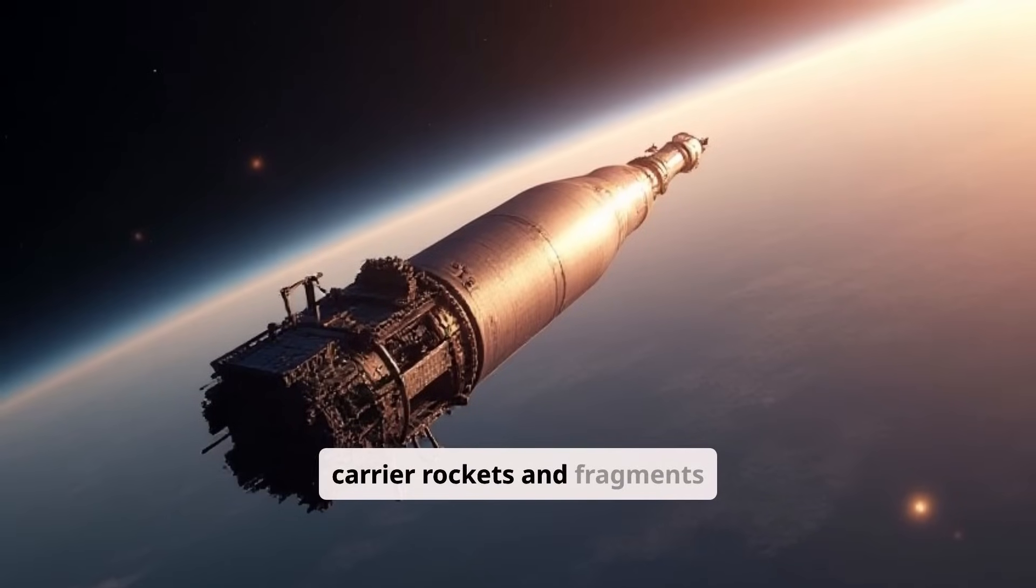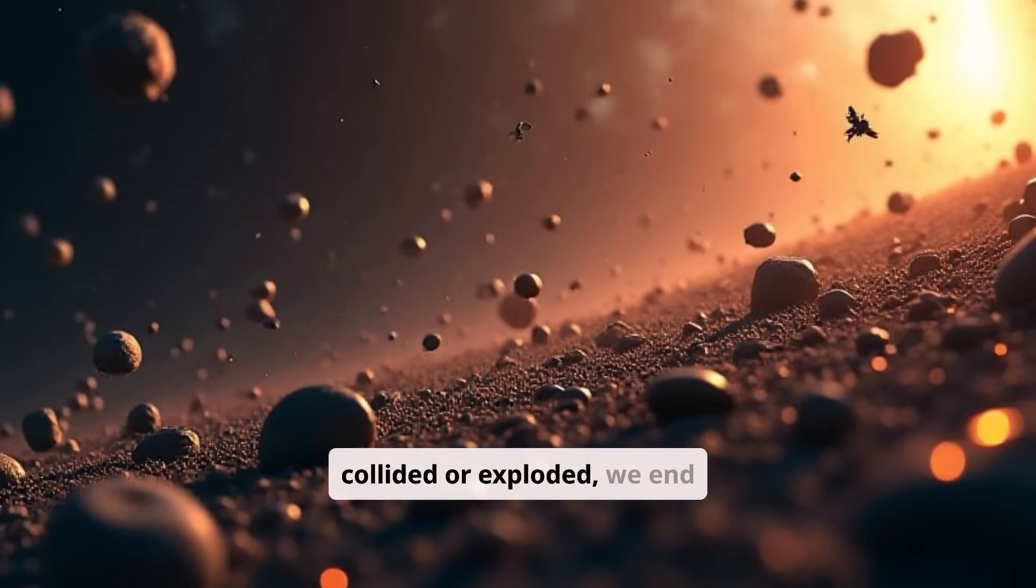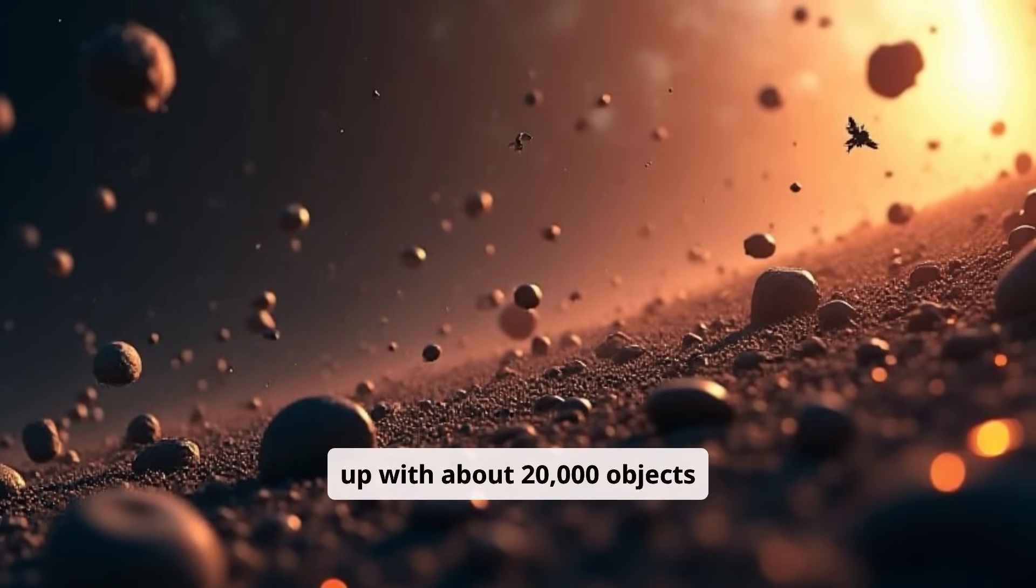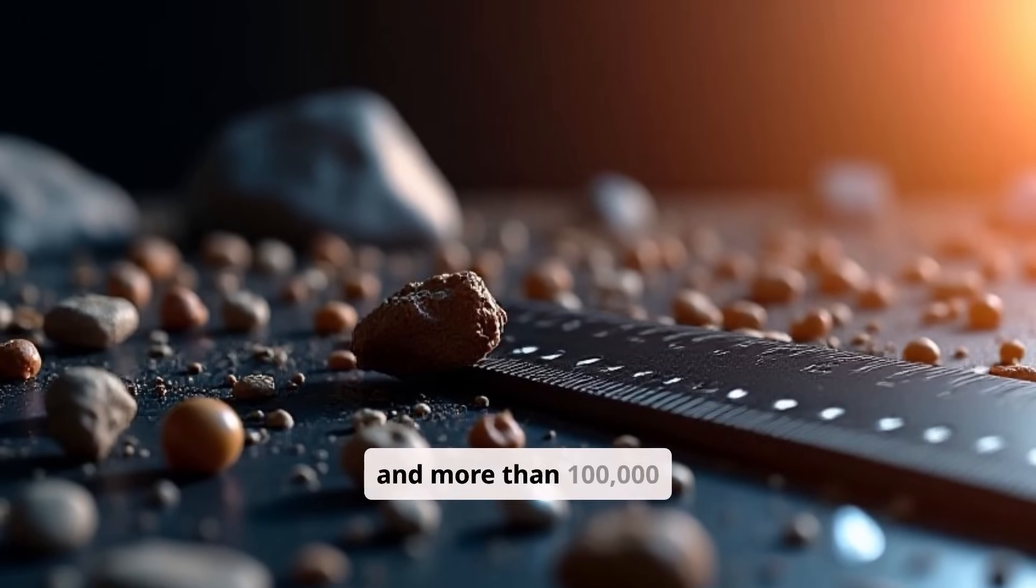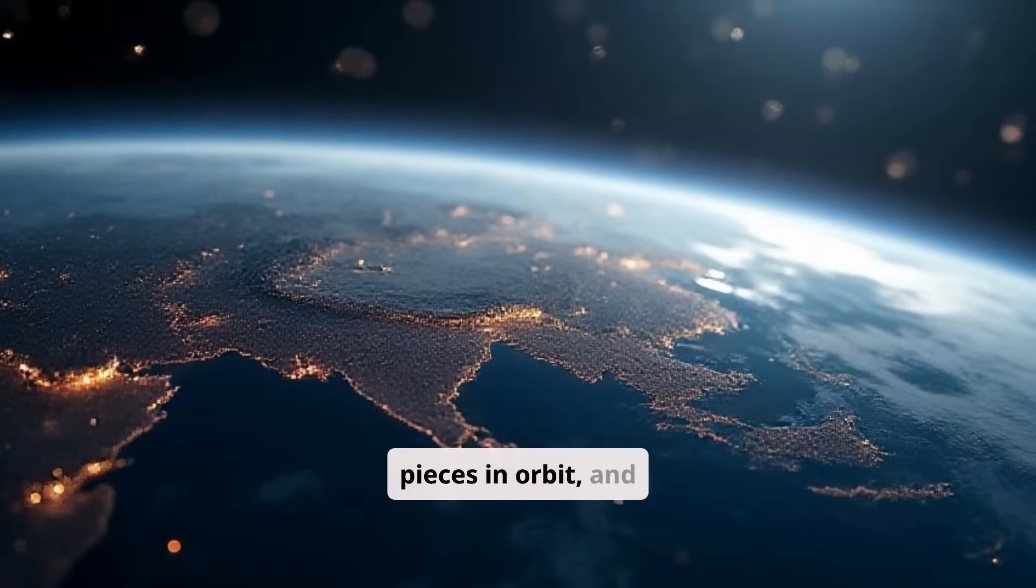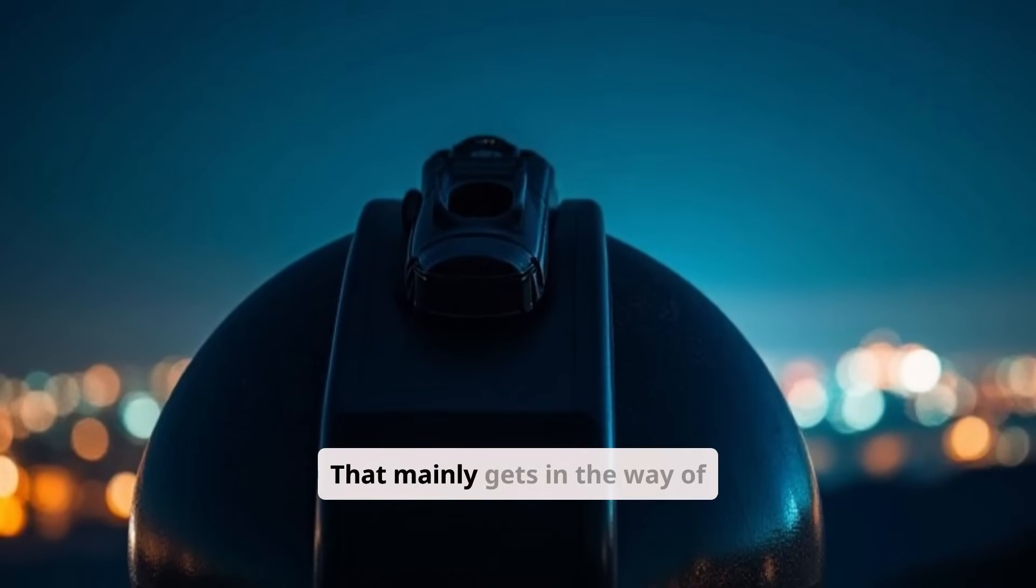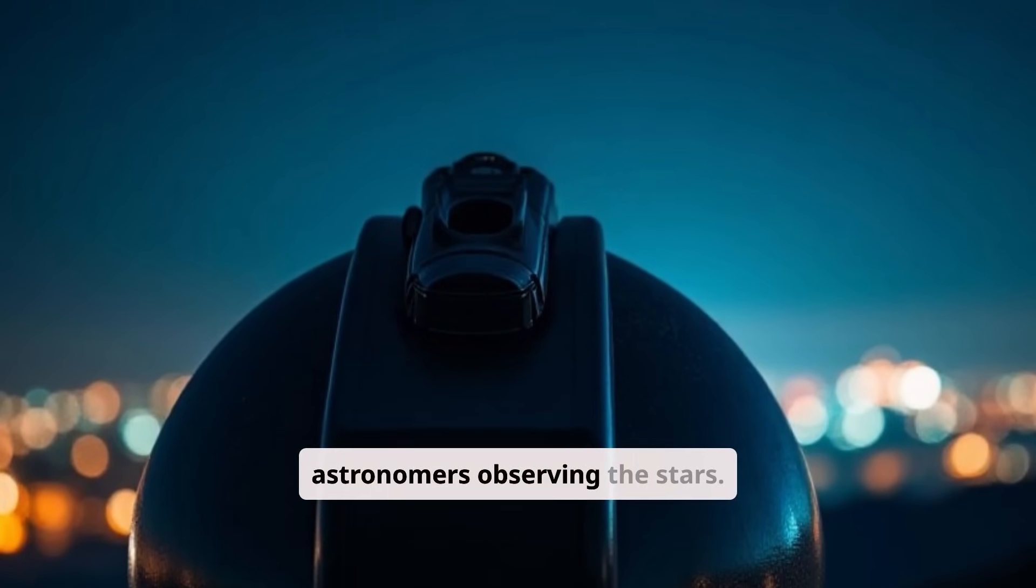If we add discarded parts of carrier rockets and fragments, created when these objects collided or exploded, we end up with about 20,000 objects larger than 10 centimeters and more than 100,000 larger than a centimeter. There are millions of the tiniest pieces in orbit, and all together they create a proper fog around the planet that mainly gets in the way of astronomers observing the stars.